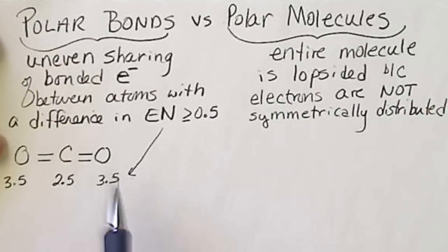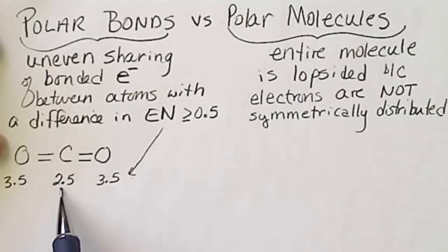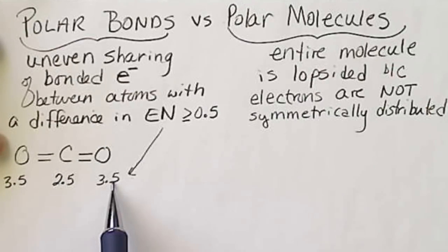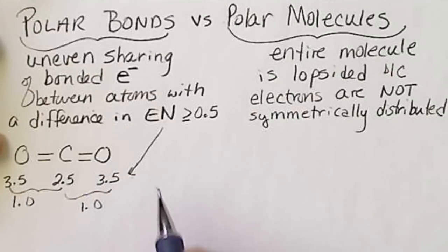For example, CO2 would be a linear molecule, and carbon's electronegativity value is 2.5, and oxygen is 3.5. The difference in electronegativity values here is 1.0 in both cases.